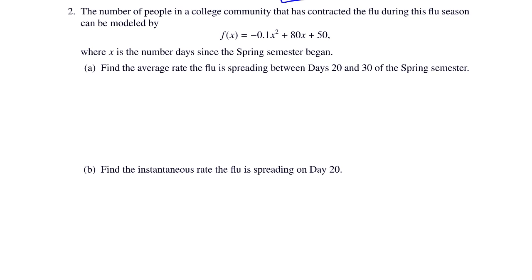In question a, we want to find the average rate of change that the flu is spreading. And that's between days 20 and 30. So this would be f of 30 minus f of 20 over 30 minus 20. Use a calculator to crunch these numbers and you get 75 people per day.